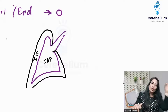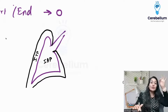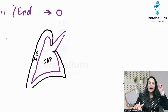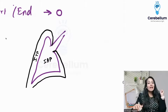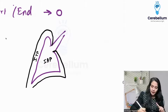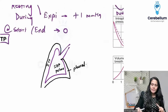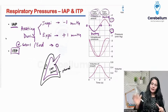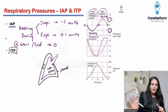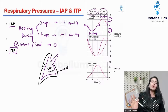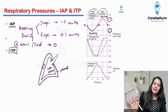ITP is also known as intrapleural pressure, and IAP is also known as intrapulmonary pressure. Do not confuse pulmonary with pleural — alveoli and pulmonary are the same thing, and pleural and thoracic refer to the same space.